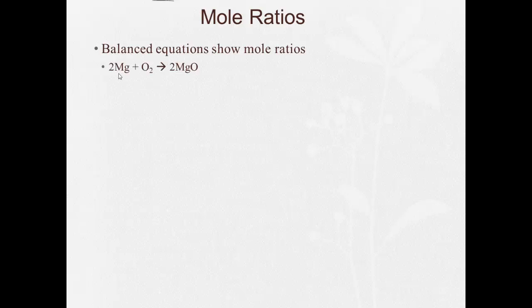For example, here we have the balanced equation 2Mg plus O2 yields 2MgO. There's 2 magnesiums on the left, 2 oxygens on the left, 2 magnesiums on the right, 2 oxygens on the right. So the ratio is 2 to 1 to 2. 2 magnesium to 1 oxygen to 2 magnesium oxide. And remember, it's the coefficients that are in the mole ratio, not the subscripts.